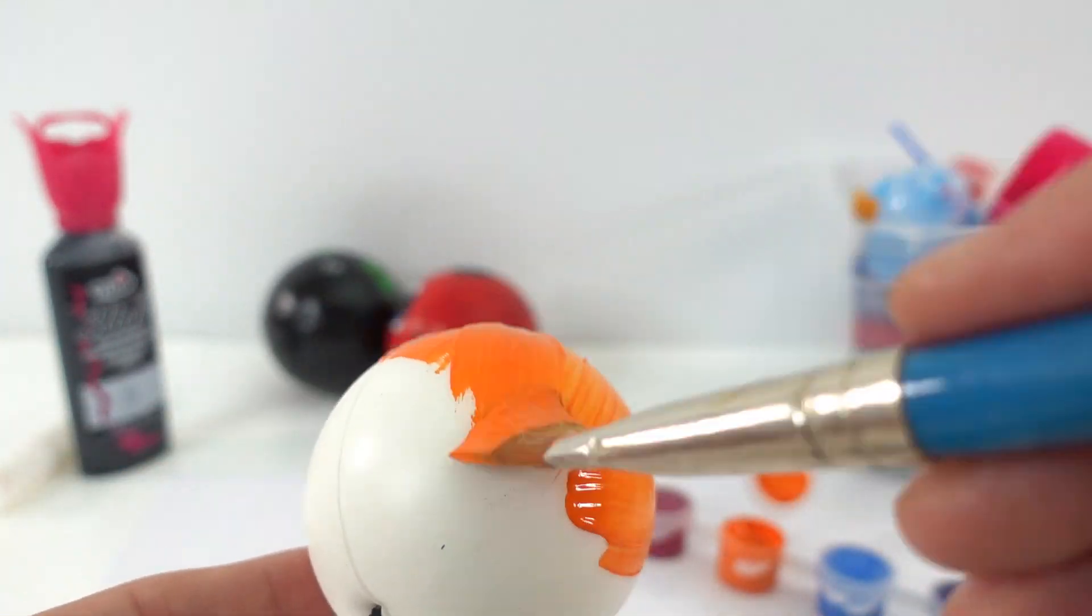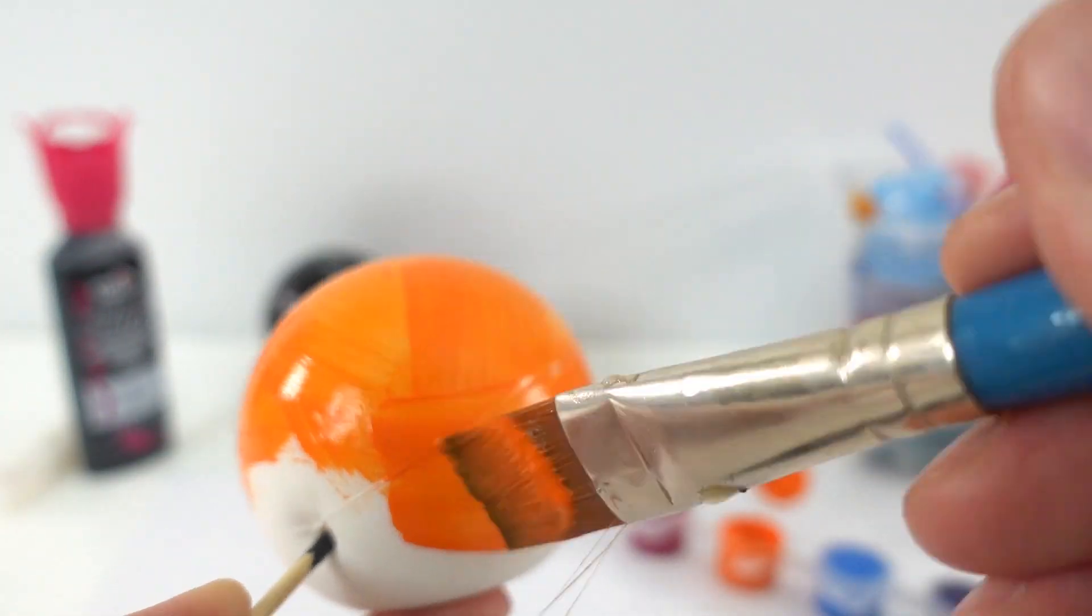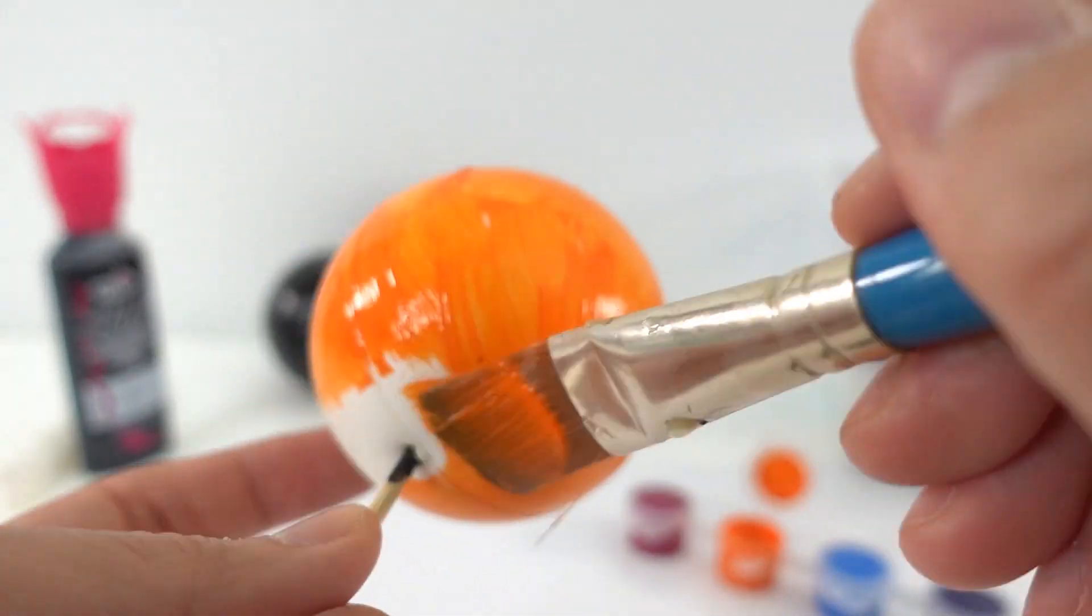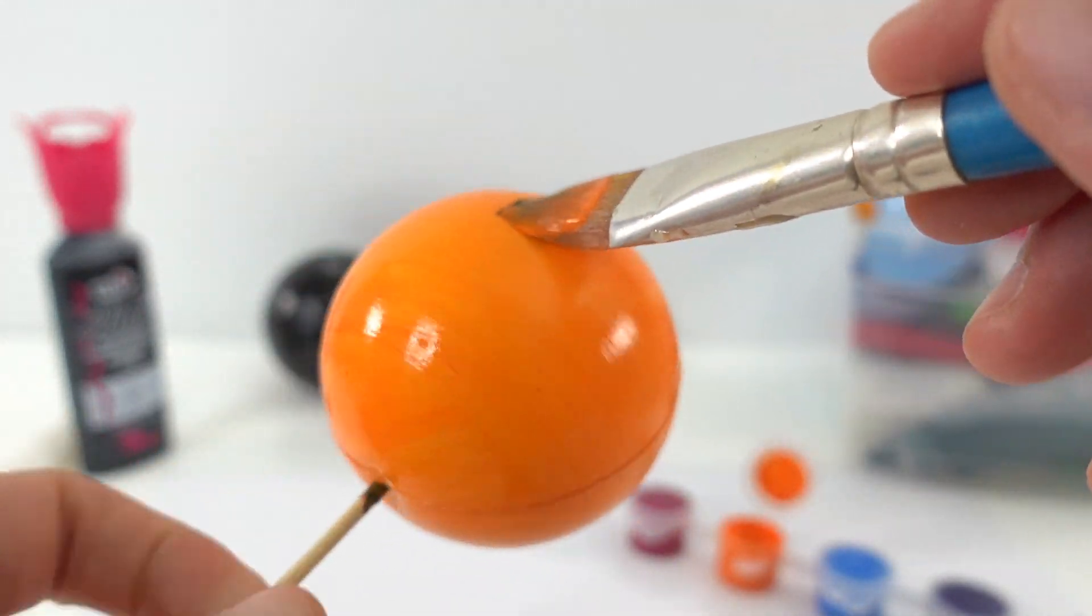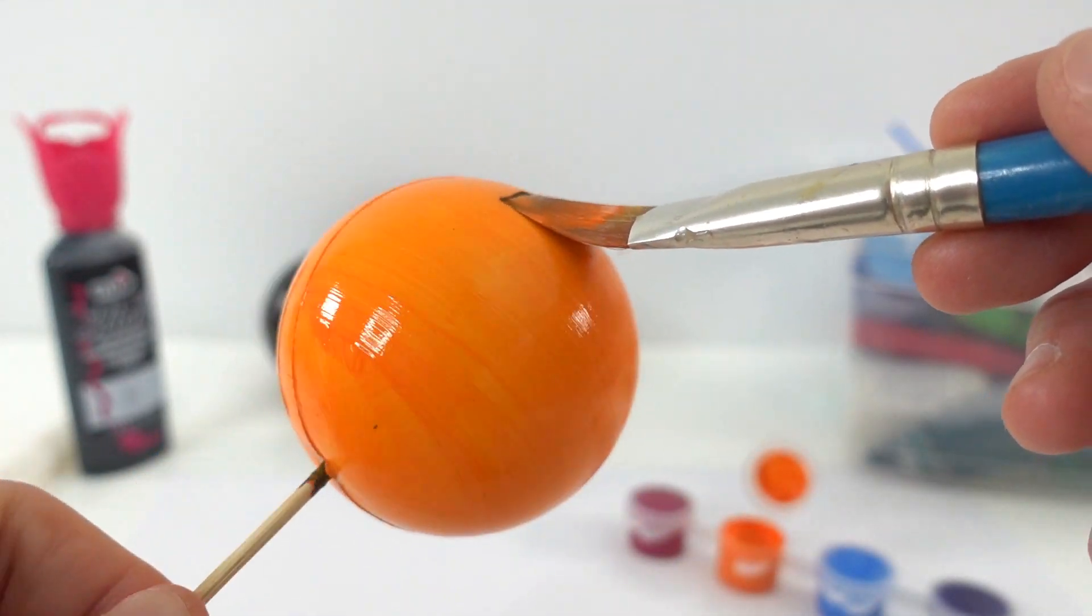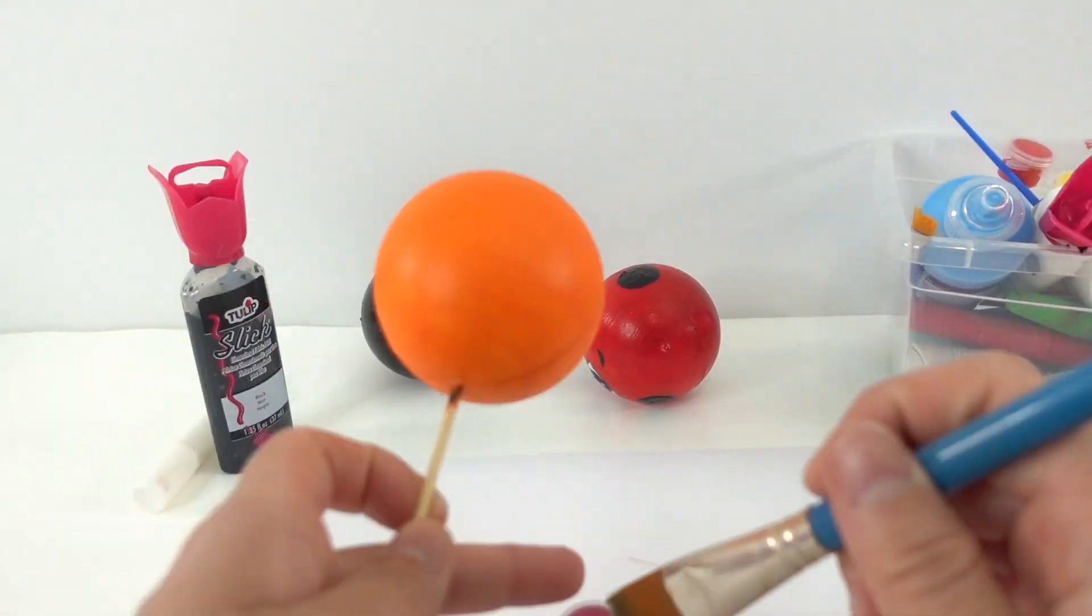Here for Trix, we're going to paint the entire ball orange. I really like to do this spin to even out the paint. It's really really satisfying.